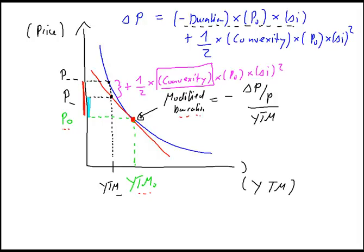Then, if interest rates increase — so the yield to maturity goes up, let's say again plus 100 basis points — and we measure the price change using duration, we would overestimate the price change compared to the price that we can observe in the market. The price observed in the market would lie on the price function; I call it P-plus-plus. So, if we use duration and interest rates increase, we would overestimate the price change, whereas the actual price change in the market would be lower.